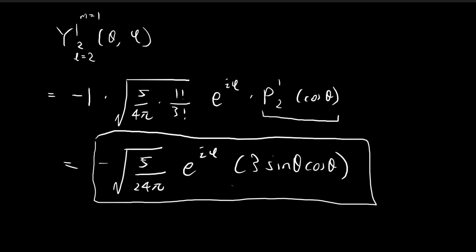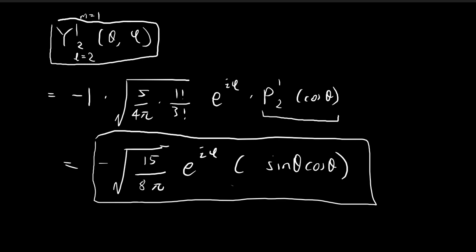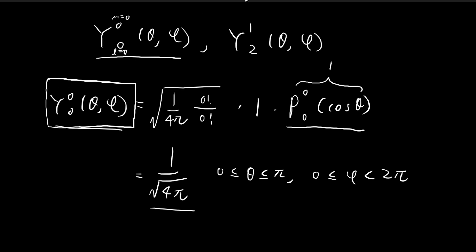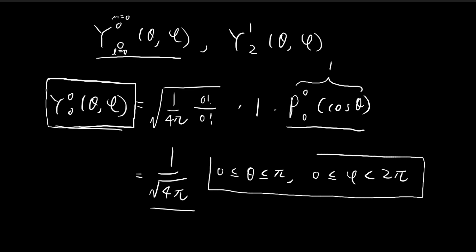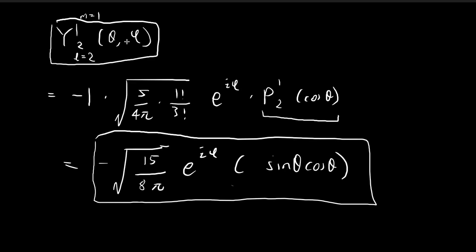Substituting 3sinθ cosθ back into the expression, we can absorb the factor of 3 inside the square root, replacing it with 9. Simplifying the constants, the numerator becomes 5×3 = 15 and the denominator becomes 8. So the final result is Y₁²(θ,φ) = −√(15/8π) × e^(iφ) × sinθ cosθ. In the next video, we'll verify that Y₀⁰ and Y₁² are both normalized by integrating their squared moduli over the full domain and confirming the result equals 1.